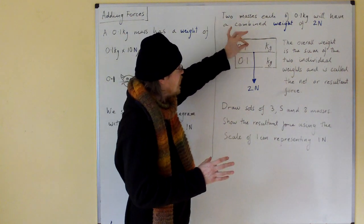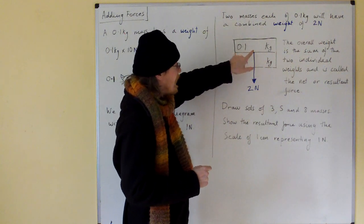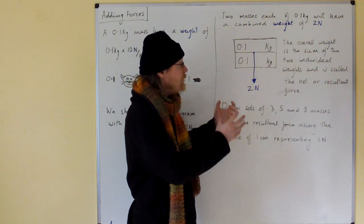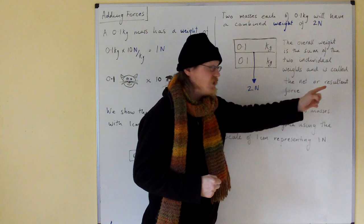This weight must be drawn from the middle of the middle. Not the middle of the bottom one, not the middle of the top one, but the absolute middle of the combined stack. The overall weight is the sum of the two individual weights and is called the net or resultant force.